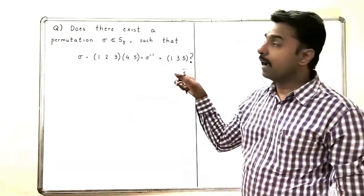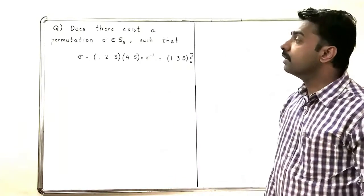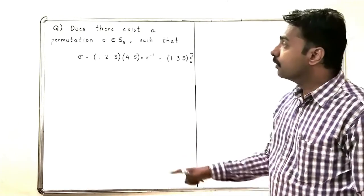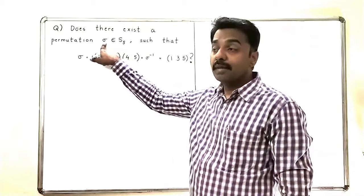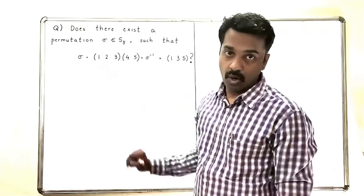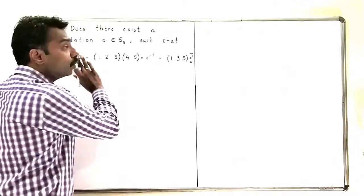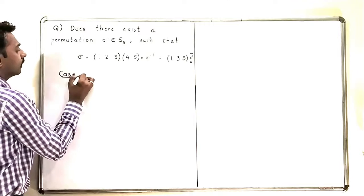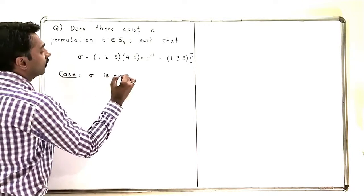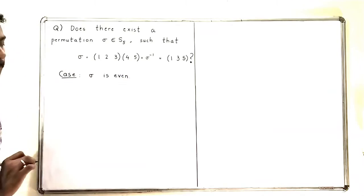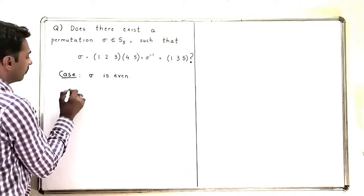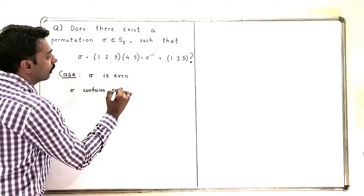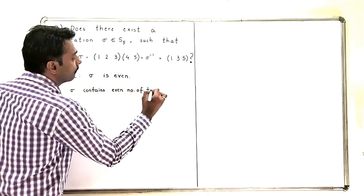It is not a very easy task to find such a σ directly, so what we will do is make two cases. We know that any permutation is either even or odd. I don't know whether such a permutation exists or not, so the first case will be: what will happen if σ is even?